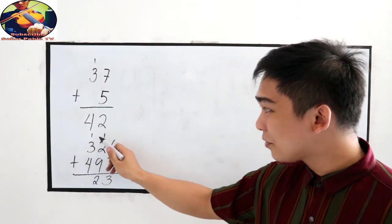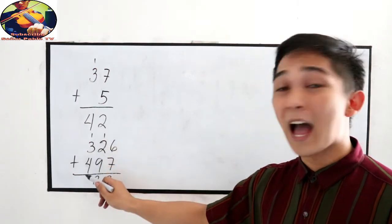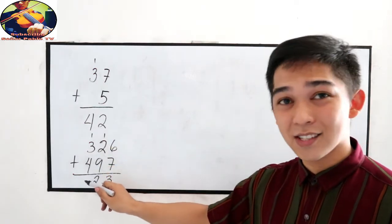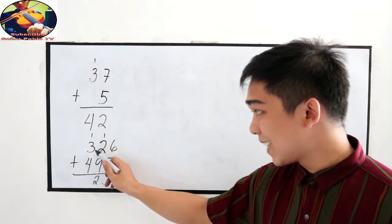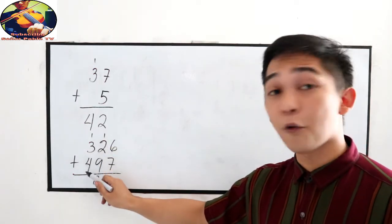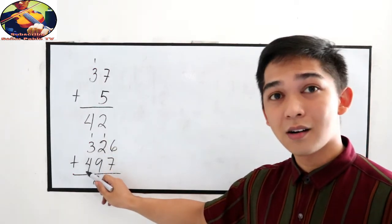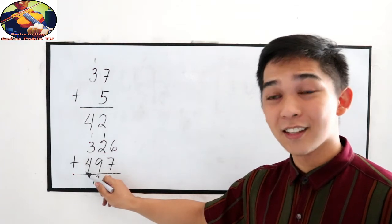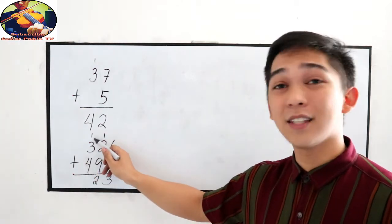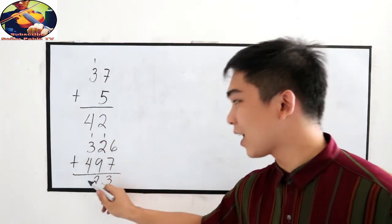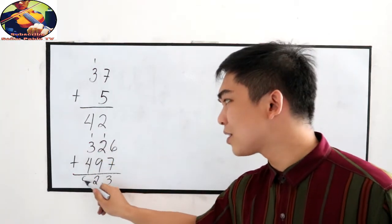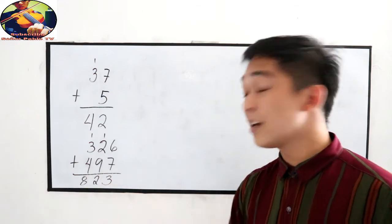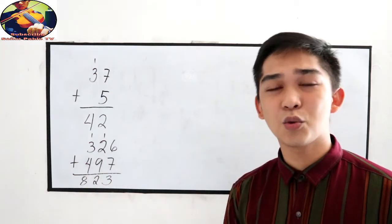Now we have our 100's place. 3 plus 4, that is 7. Then carry 1, which gives 8. So the sum is 823.